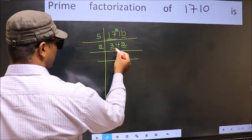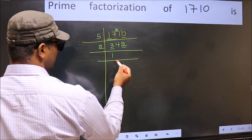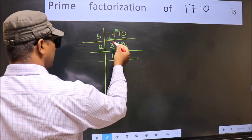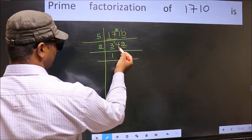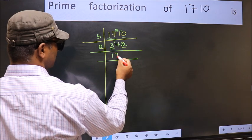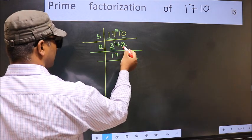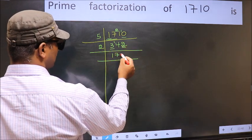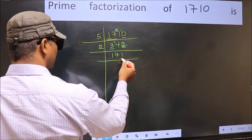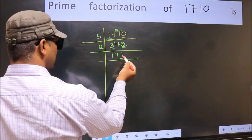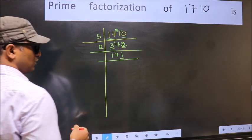First number is 3. A number close to 3 in the 2 table is 2×1=2. 3-2=1, carry 1 forward to get 14. When do we get 14 in the 2 table? 2×7=14. The other number is 2. When do we get 2 in the 2 table? 2×1=2. So 342 ÷ 2 = 171. Now the last digit is 1, which is odd, so not divisible by 2.